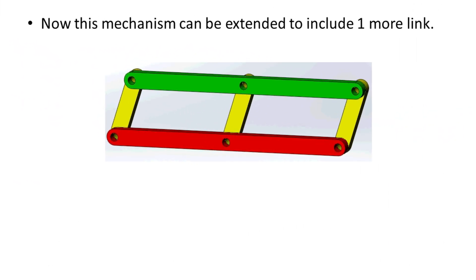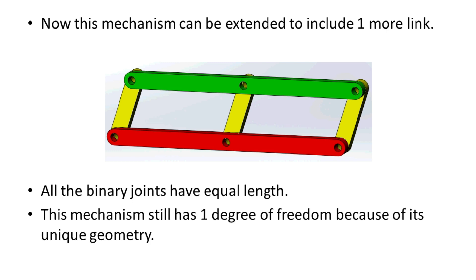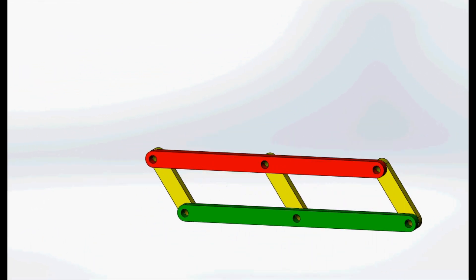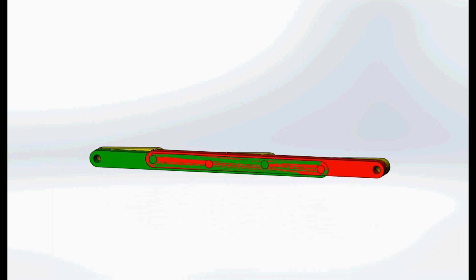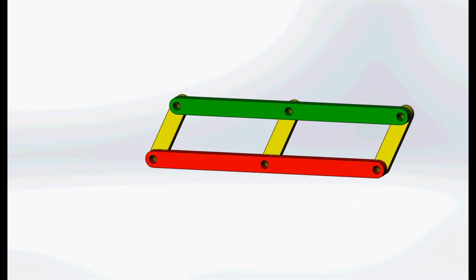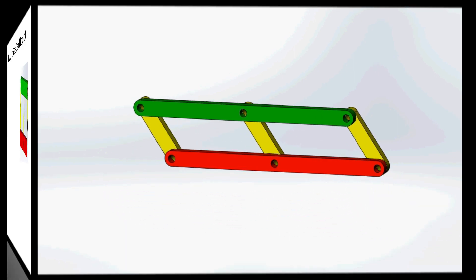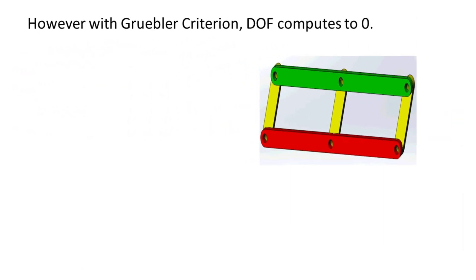This mechanism can be extended to include one more link, as shown. All the binary links have equal length. This mechanism still has one degree of freedom because of its unique geometry. However, with the Gruebler Criterion, the degree of freedom of this mechanism computes to 0.